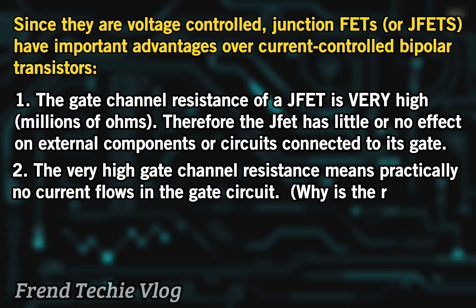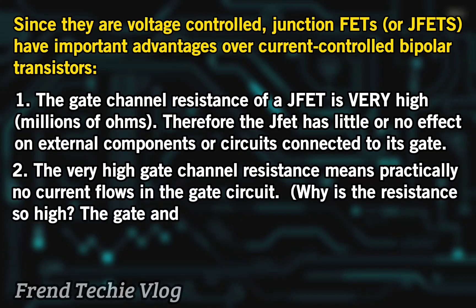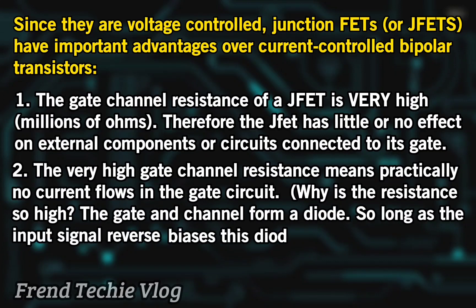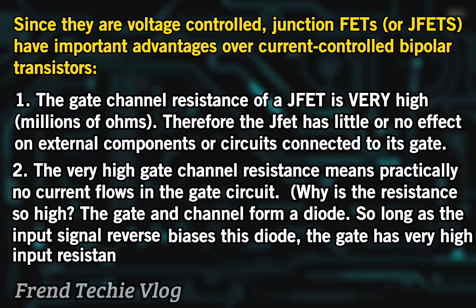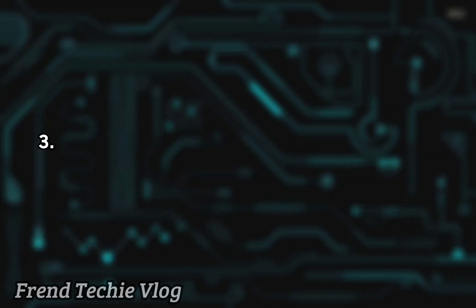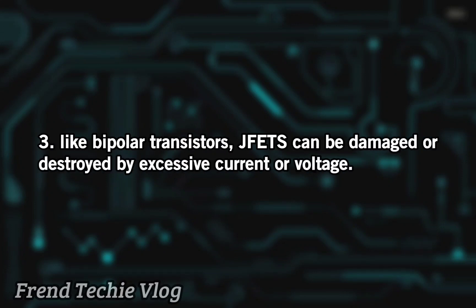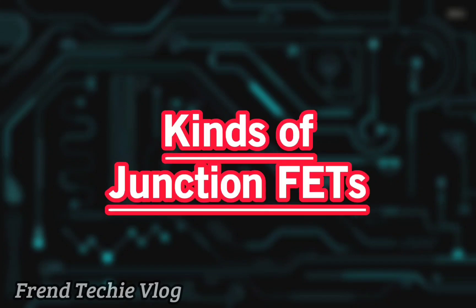Why is the resistance so high? The gate and channel form a diode. So long as the input signal reverse biases this diode, the gate has very high input resistance. Like bipolar transistors, JFETs can be damaged or destroyed by excessive current or voltage.